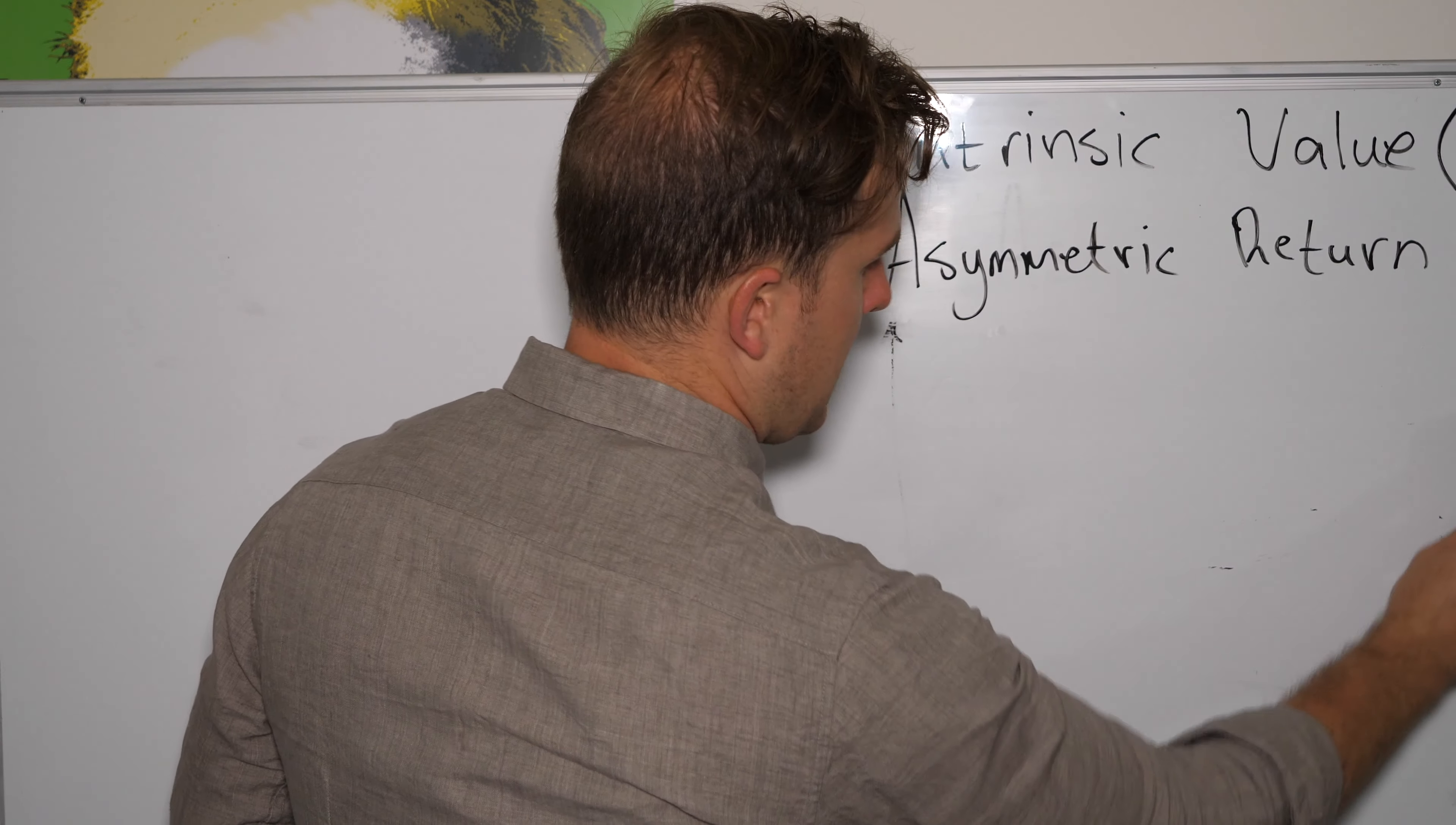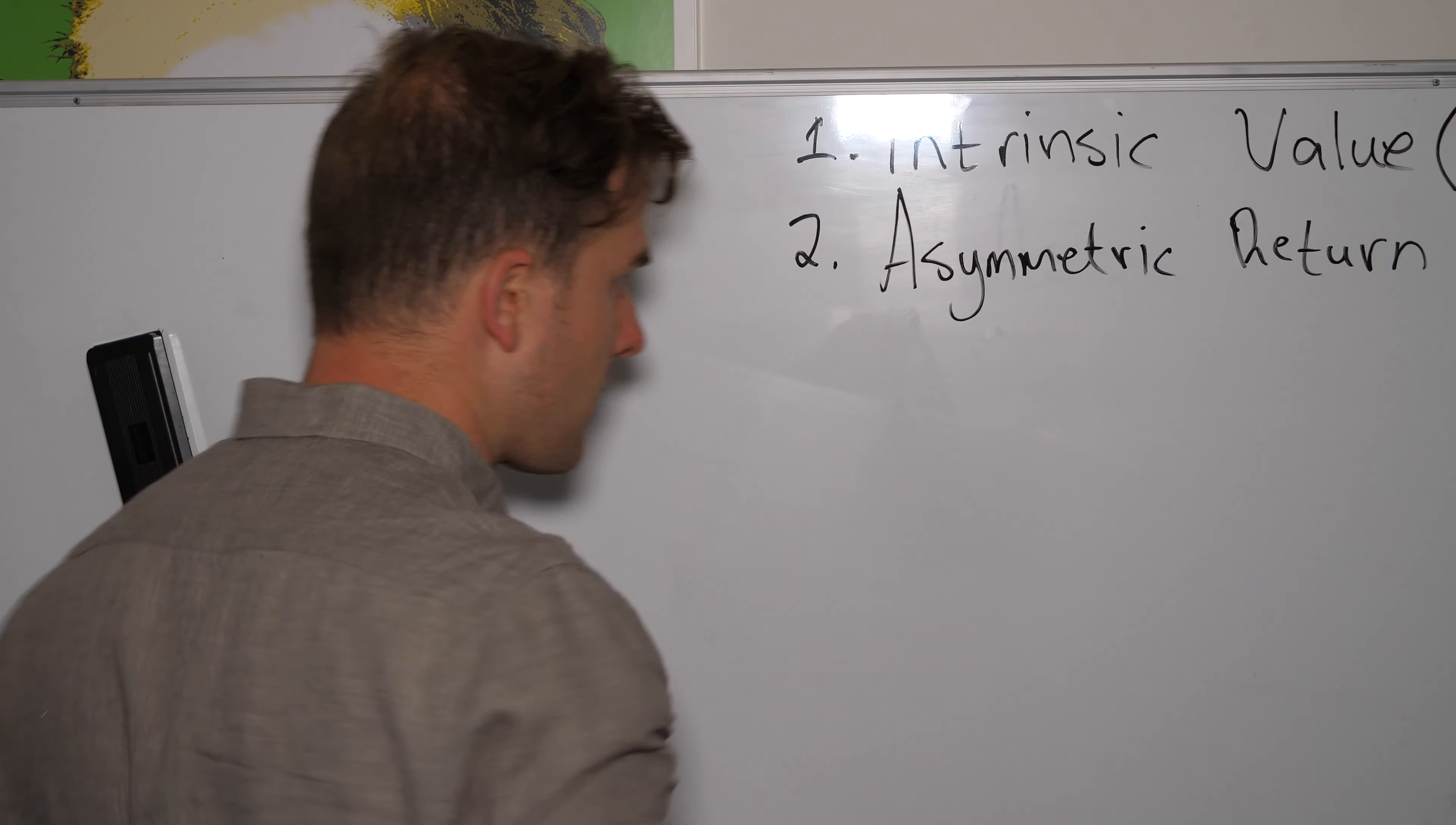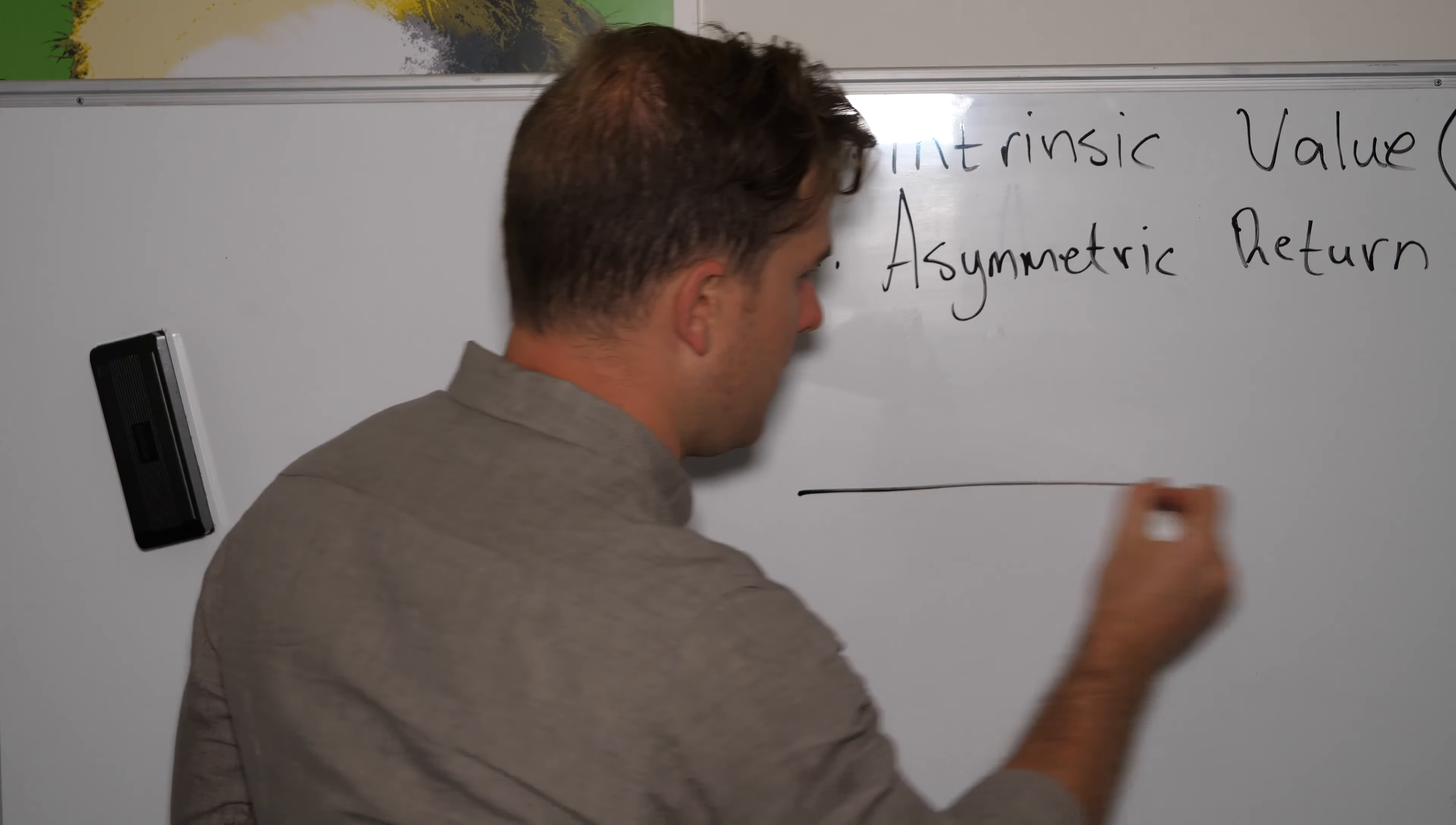Now, the last one, which is asymmetric return, is going to be much easier for us to understand. So let's say that we have a horizontal line, which we do, and anything above this line is a profit and anything below the line is a loss. Now, I've probably drawn that a little bit high, but we'll get to it in a second.